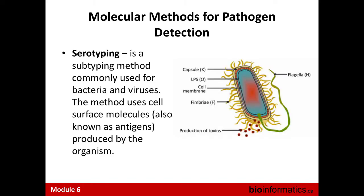Serotyping is a historically popular method for identifying bacteria and viruses. It uses antibody techniques designed to detect specific cell surface components known as antigens for those pathogens.